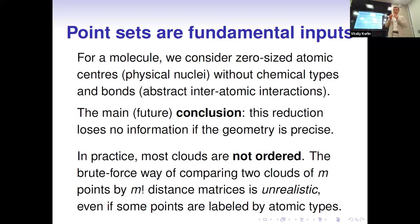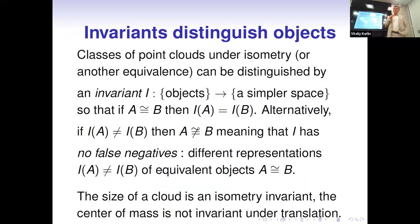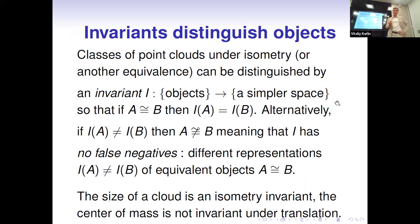You will see later why you actually don't lose any information if you know atomic coordinates precisely enough. In practice, if you take any point cloud — for example feature points or corner points from an image in computer vision or computer graphics — these points are usually not ordered, especially if there are many of them. That's why the case of unordered points is more practical. To distinguish objects under any equivalence relation such as rigid motion, we need to use invariants — functions from our set of objects to a simpler space of numbers, vectors, or matrices.